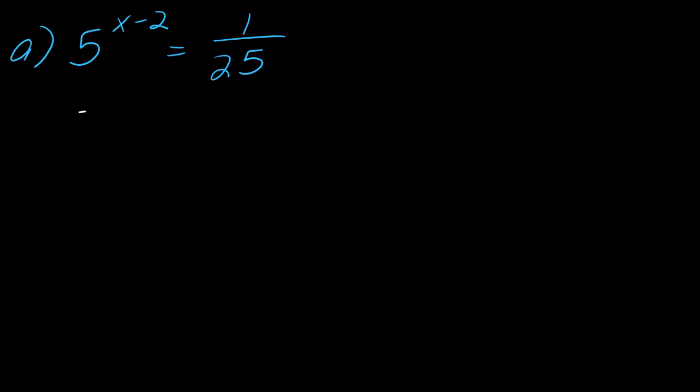For this one, I cannot rewrite 5 to the x minus 2 any other way. But 1 over 25, that can be rewritten as 5 to the negative second. So that's the trick you have to notice with this one. And then otherwise, this problem is not so bad, because now you can just take out the exponents. Then I just add 2 to each side, and I get x equals 0. Which makes sense, right? How could this possibly equal 5 to the negative second? x has to be 0 once you take a step back and look at it.